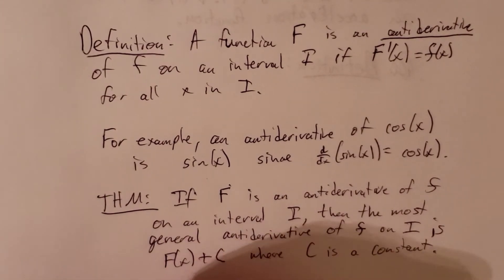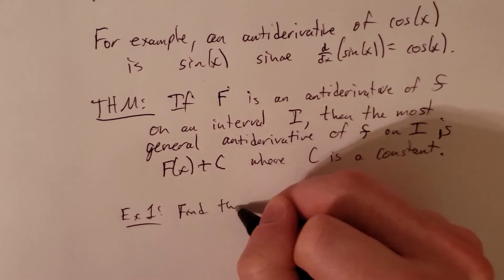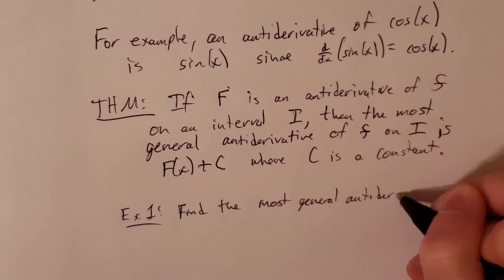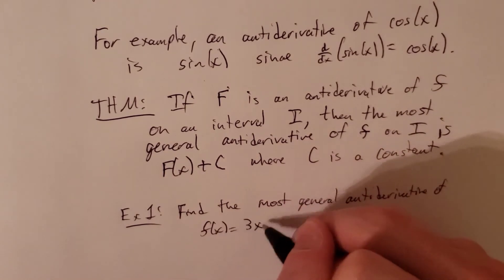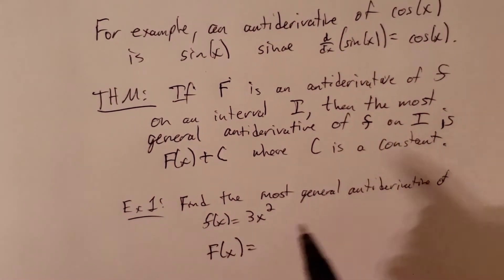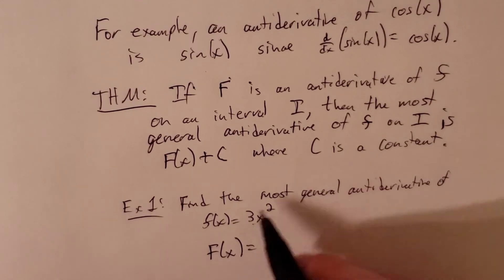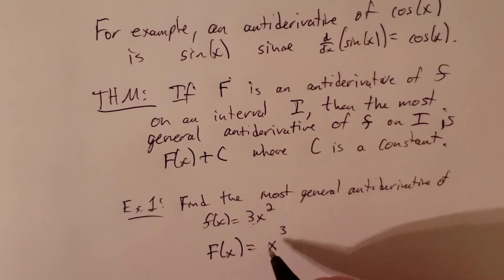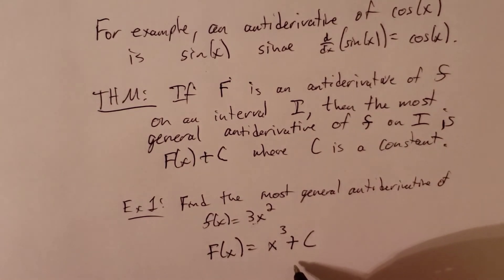Let's see a quick example related to that. Find the most general antiderivative of f of x equal to 3x squared. Well, we notice that one antiderivative of 3x squared is x cubed, because when we take the derivative of x cubed, we get 3x squared.